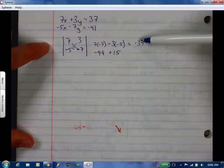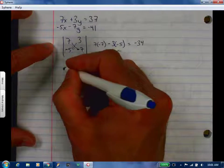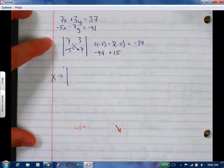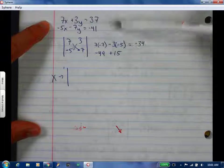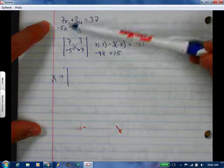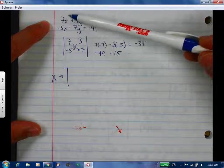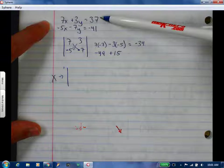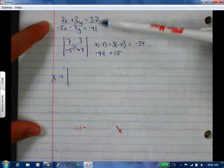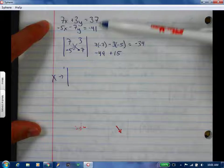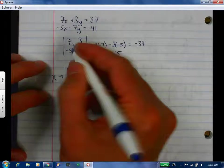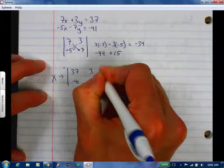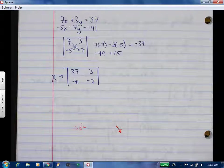So now we're going to look for our x. So which numbers do I take out? The 7, negative 5, or the 3, negative 7? 7, negative 5, and they get replaced with the answers. So it's going to be 37, negative 41, 3, negative 7. I guess I don't know for sure if this one works out or not, but we're going for it.